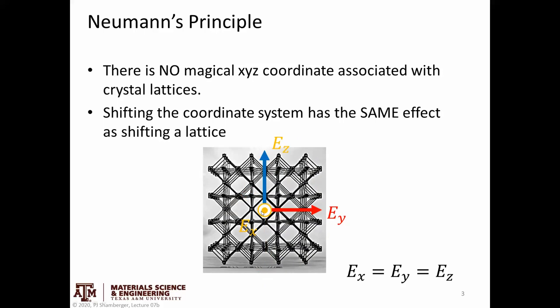So if I go back, let's say observer one defined this as their coordinate system. Observer two chose a totally equally valid coordinate system that follows the symmetry of the properties.